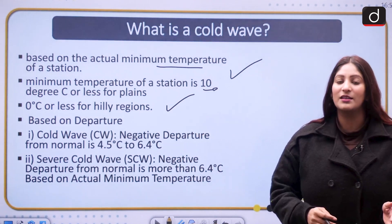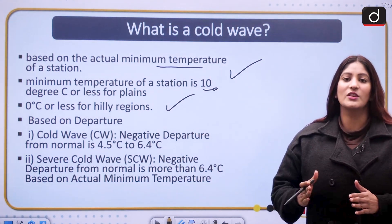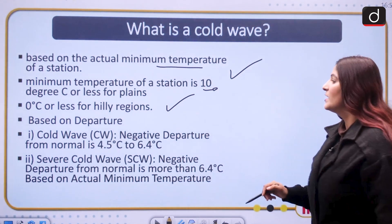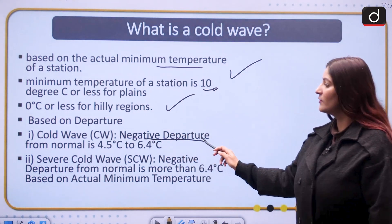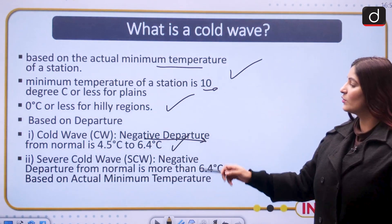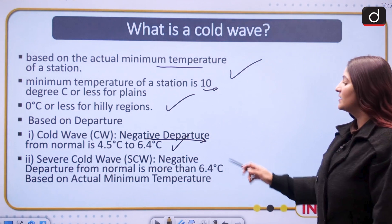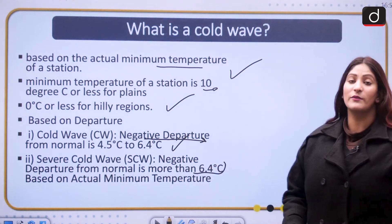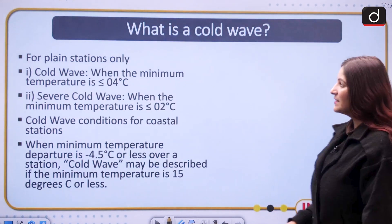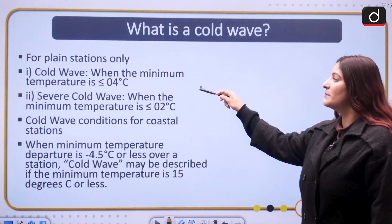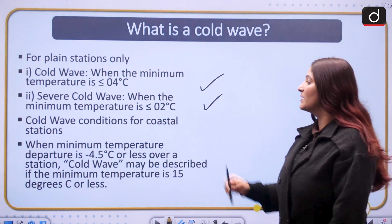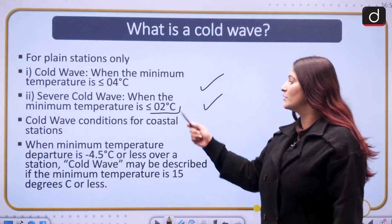Another criterion is based on departure — how much the temperature departs from the base. For cold wave, the negative departure from normal is 4.5 degrees to 6.4 degrees Celsius, and severe cold wave is when the negative departure from normal is more than 6.4 degrees Celsius. For plain stations, cold wave is when the minimum temperature is less than or equal to 4 degrees Celsius, and severe cold wave is when it is less than or equal to 2 degrees Celsius.